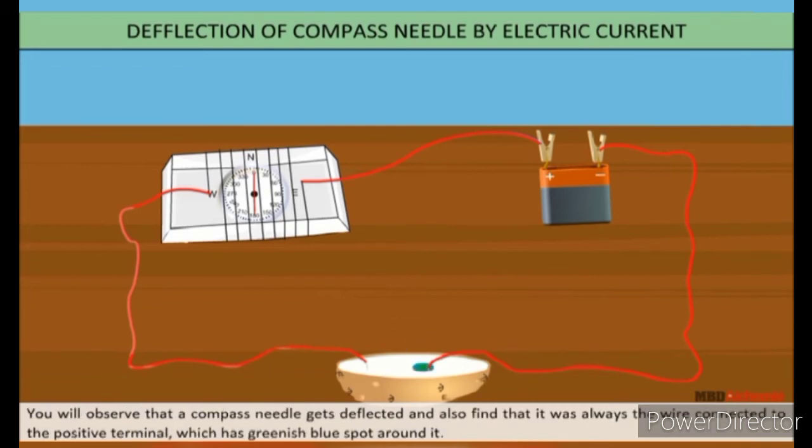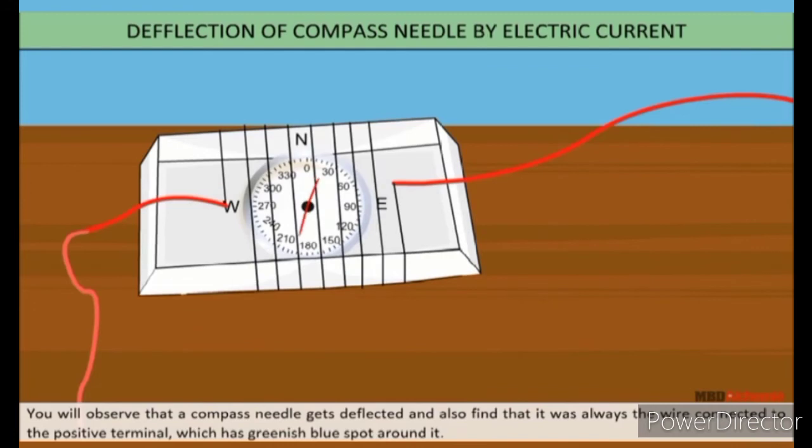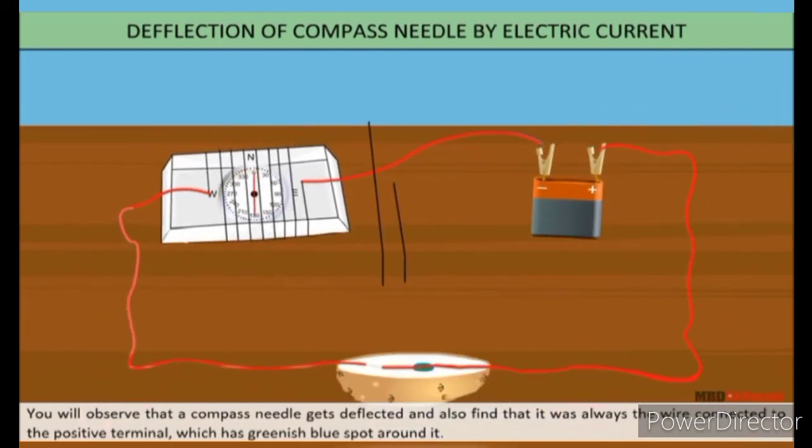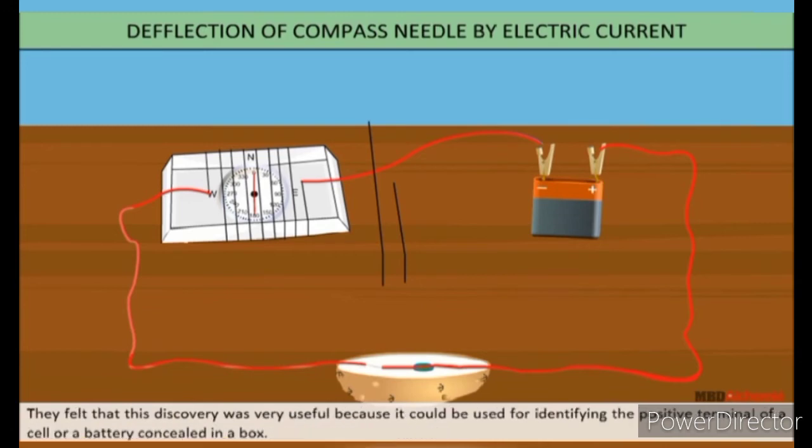You will observe that a compass needle gets deflected and also find that it was always the wire connected to the positive terminal which has greenish-blue spot around it. They felt that the discovery was very useful because it could be used for identifying the positive terminal of a cell or a battery concealed in a box.